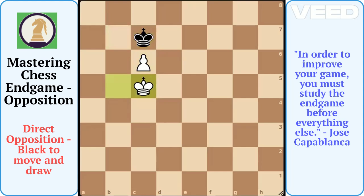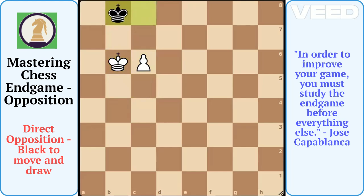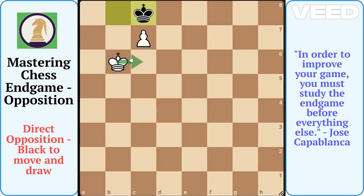And again, black will win the opposition with king b8, c7 check, king c8. If white goes king c6, it is stalemate. If white king moves anywhere else, black will win the c7 pawn and the game is drawn due to insufficient material.